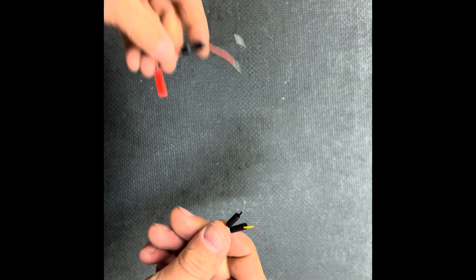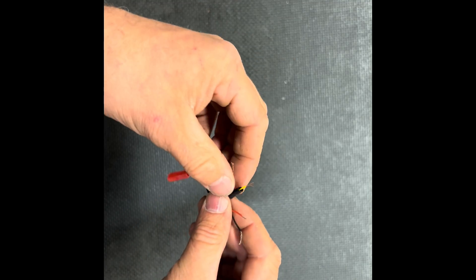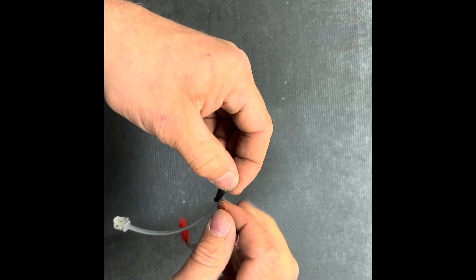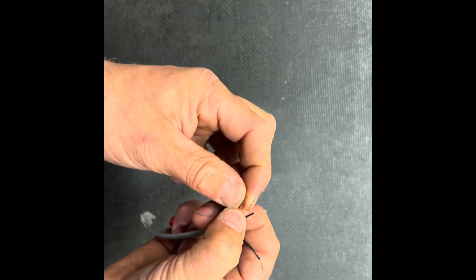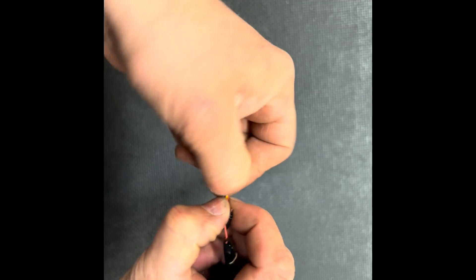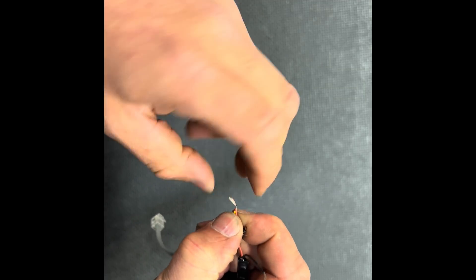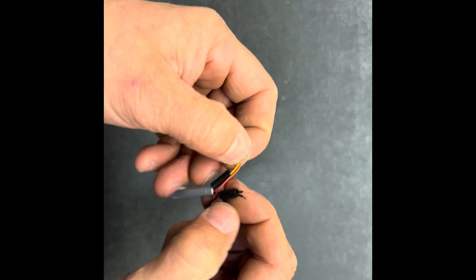We're going to take that section and we're going to connect the red wire to the yellow wire by just simply twisting them together, as well as doing that same exact thing to the black wires.